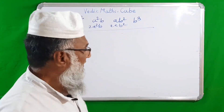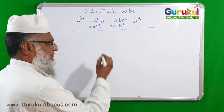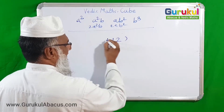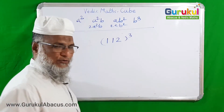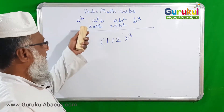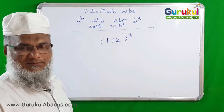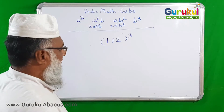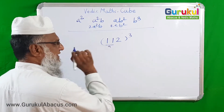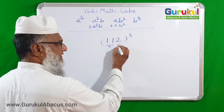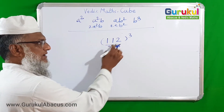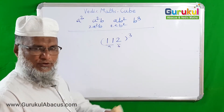Now we will take one more example. Suppose we have to find cube of 112. We are going to find cube of 112 by using this formula. Here we make the first group: A is 11 and the second group B is 2. Keep in mind, 11 is A and 2 is B.